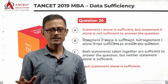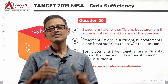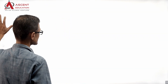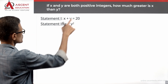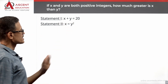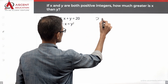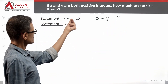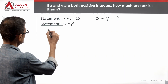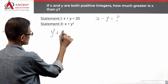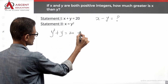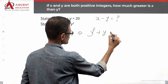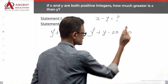In learning mode, we will verify that combining the two statements does give a unique answer. Combining: x plus y = 20, and x = y squared. Substituting x = y squared into the first statement gives y squared plus y = 20, which rearranges to the quadratic equation y squared plus y minus 20 = 0.